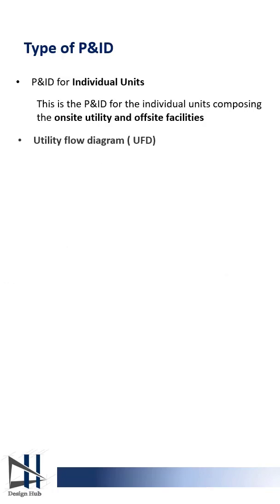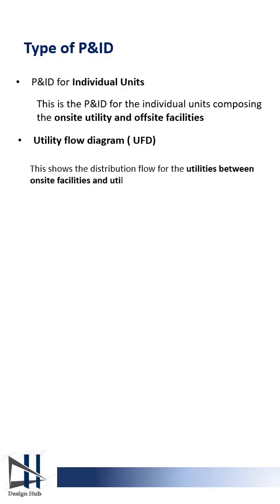The second type is a Utility Flow Diagram, or UFD. This shows the distribution of utilities between the on-site facility and utility header. The UFD is shown in the drawing.